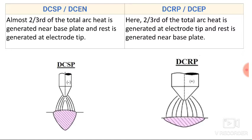Almost two-thirds of the total arc heat is generated near the base plate and the rest is generated at the electrode tip in straight polarity. As the electrons flow from electrode to the work piece, two-thirds — that is, the maximum heat — is generated at the base plate.